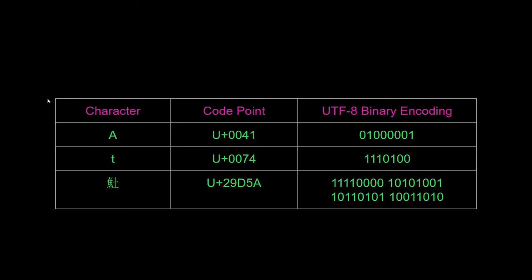We can see here the characters on the left, the code points in the middle, and the UTF-8 binary encodings on the right. The character A has a code point of U+0041—note that's hexadecimal—and here is the binary encoding.